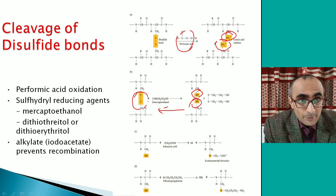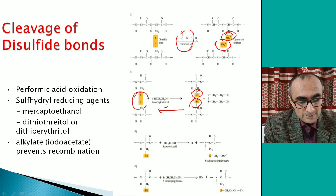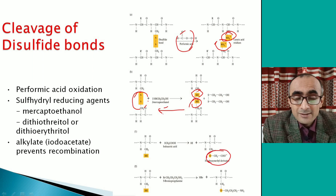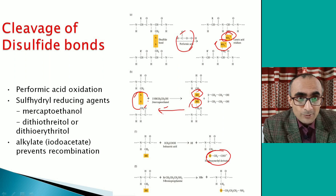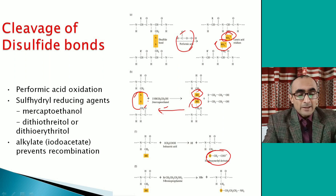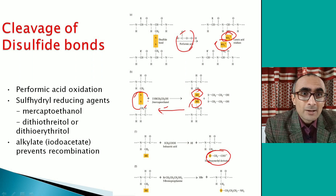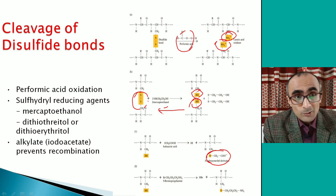Iodoacetic acid can also be used to separate cysteines in a disulfide bond. In this case, the cysteines are acetylated and permanently separated from one another — this is also not a reversible reaction. So it depends on whether you want to separate the disulfide bond permanently or reversibly, and you choose your chemical accordingly.